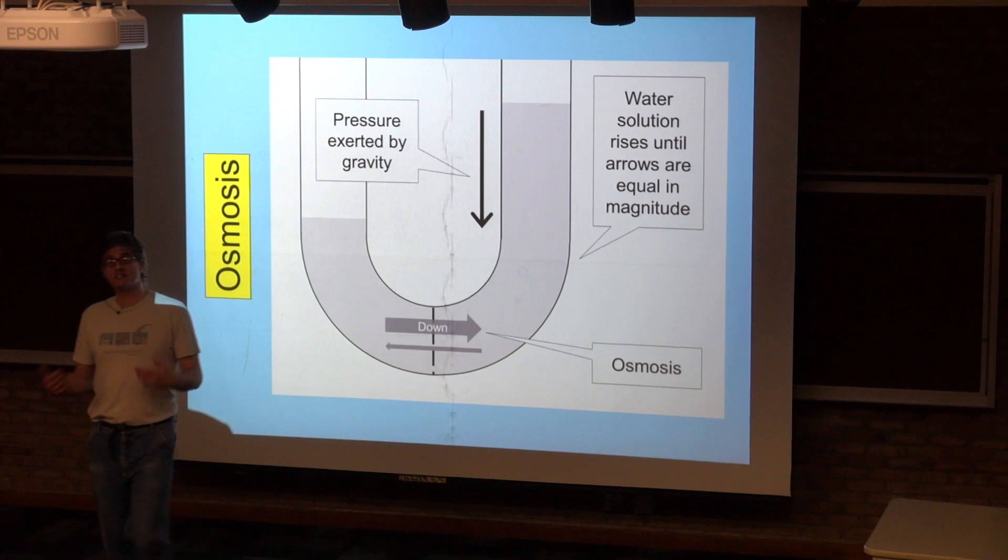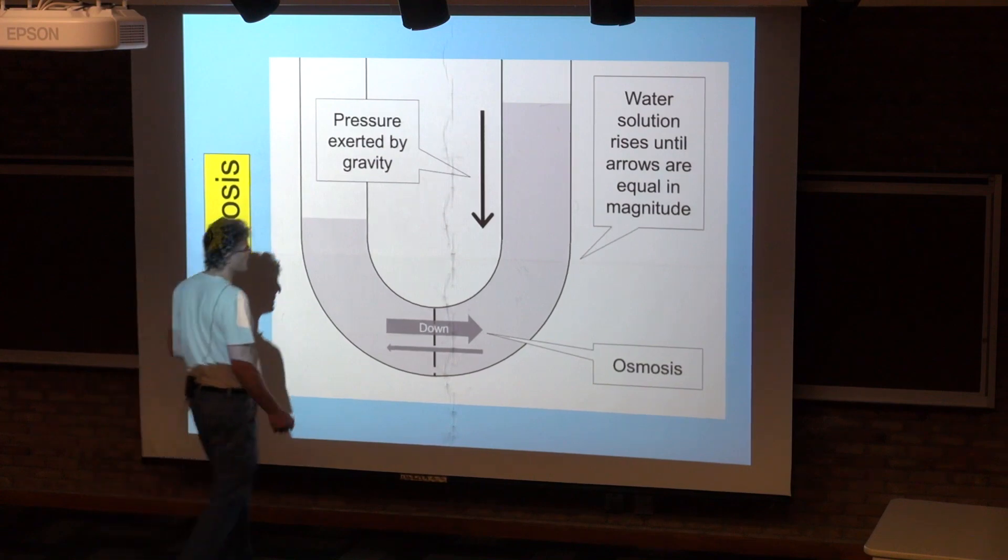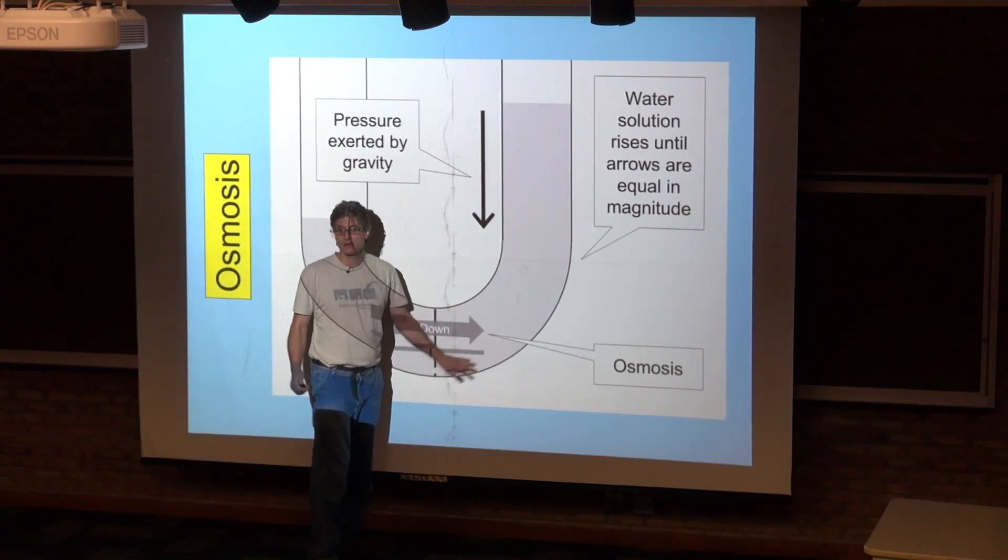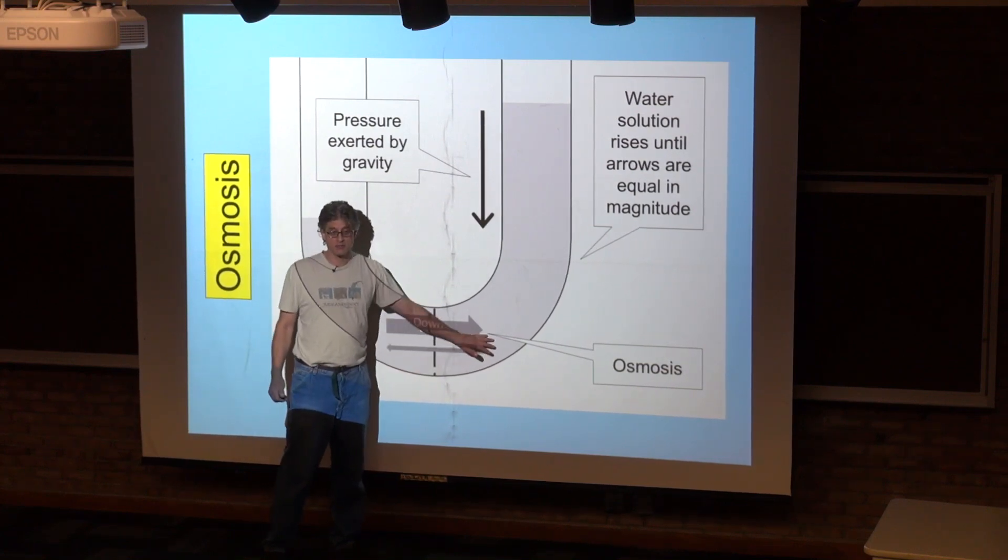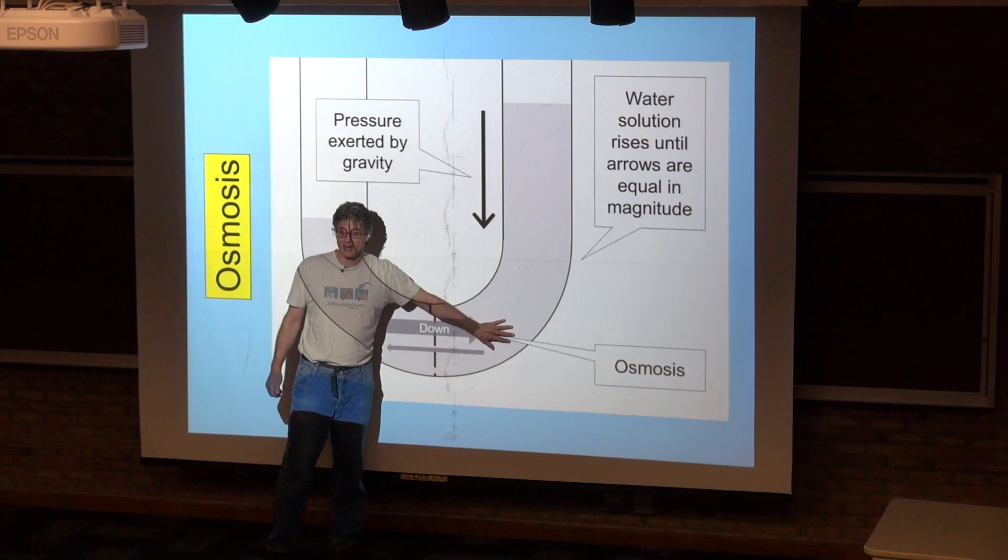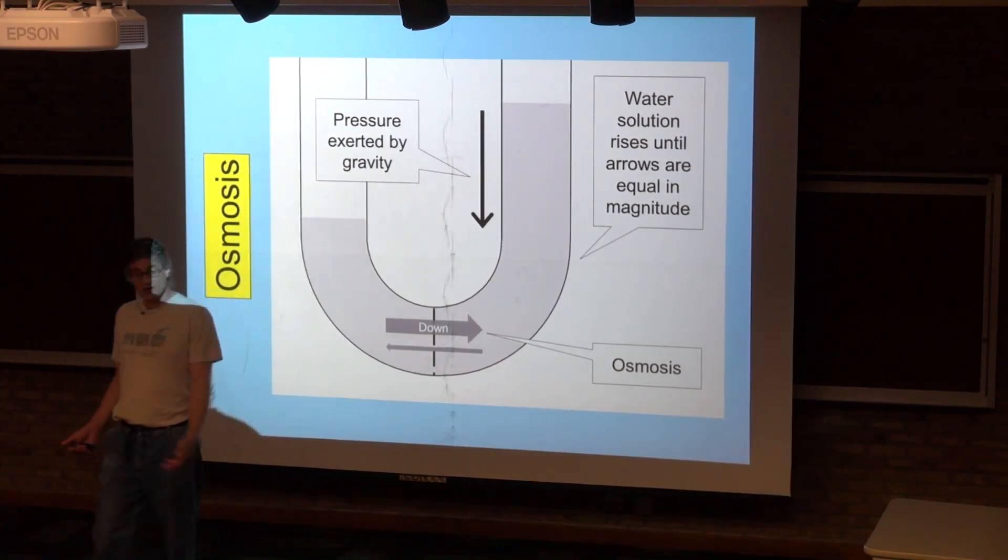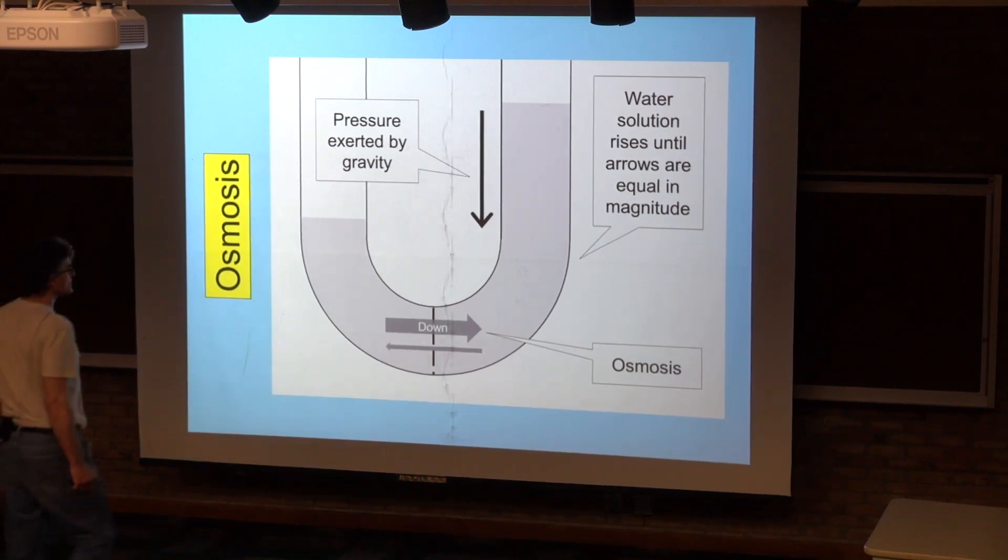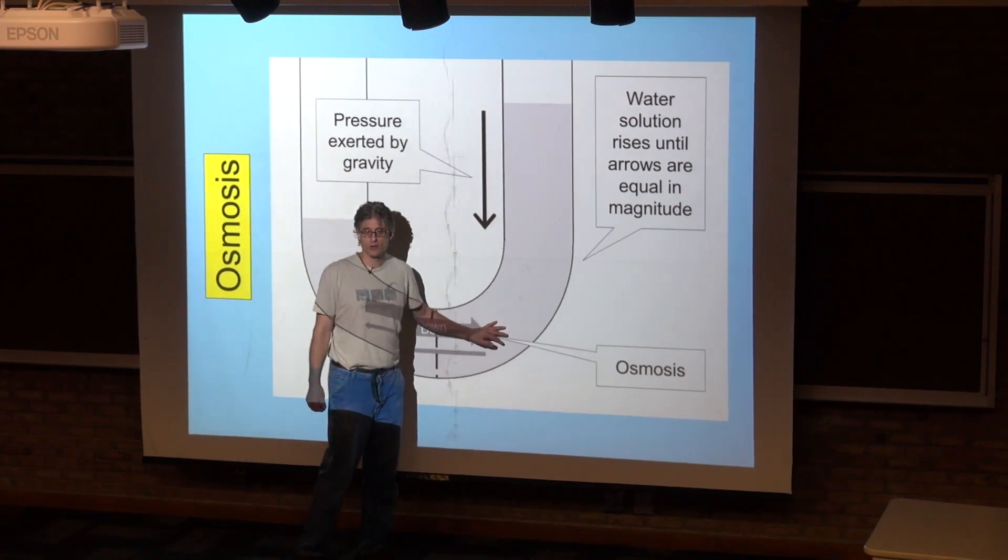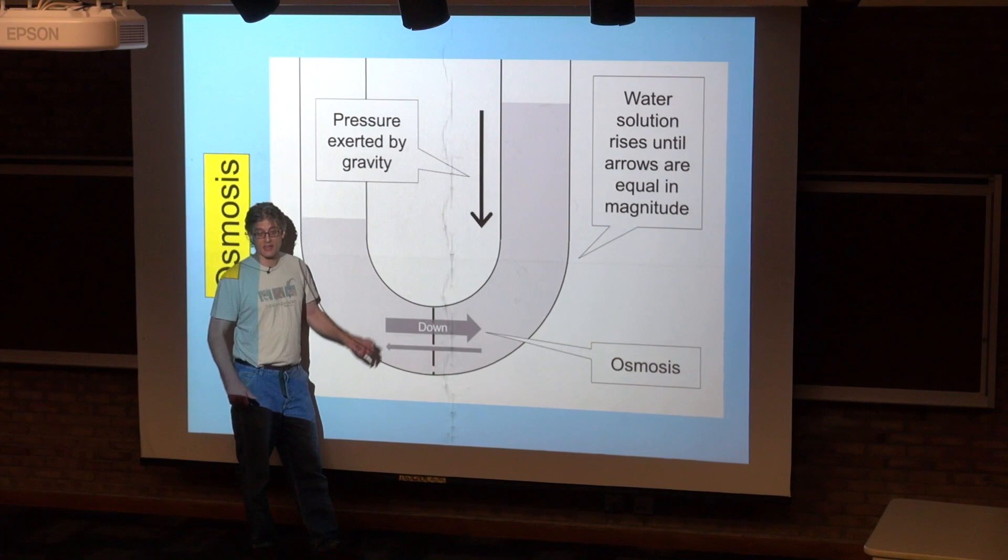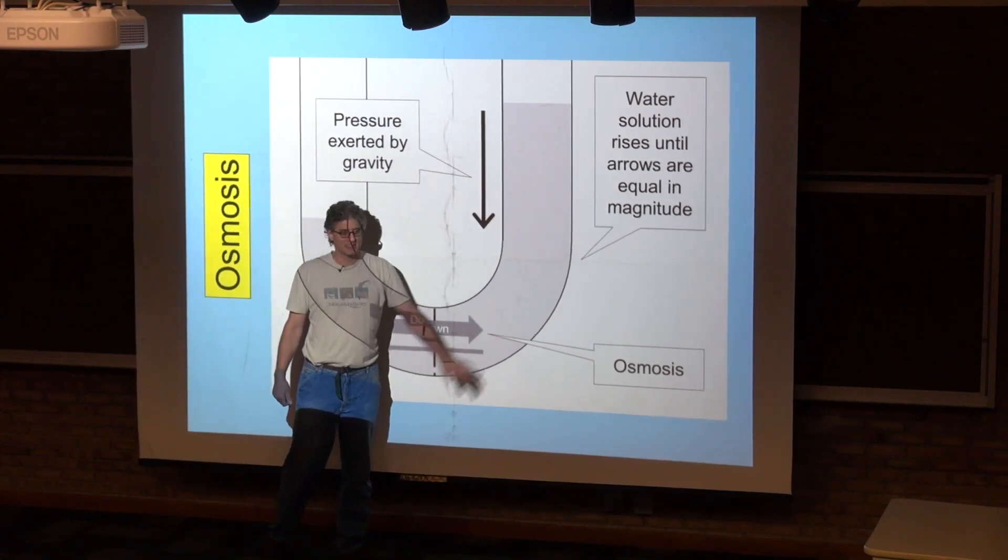If water is in solution, it will have other things in that solution besides water. Those other things can be colliding rather than water. If those other things can't cross the membrane, that means fewer things will be crossing from the region of high solute concentration to the region of low solute concentration. The end result is that water tends to move from regions of high water concentration to regions of low water concentration. Another way of saying that is regions of low solute concentration to regions of high solute concentration.